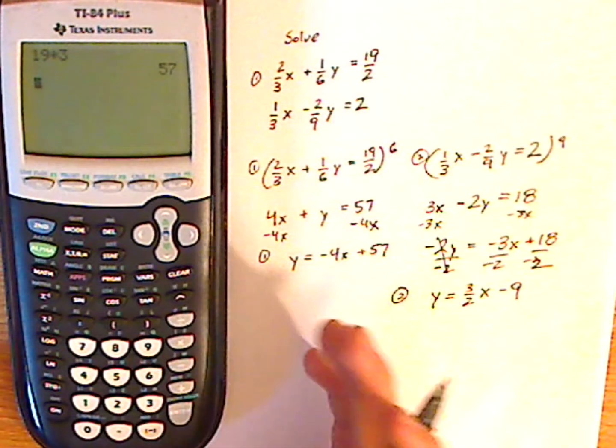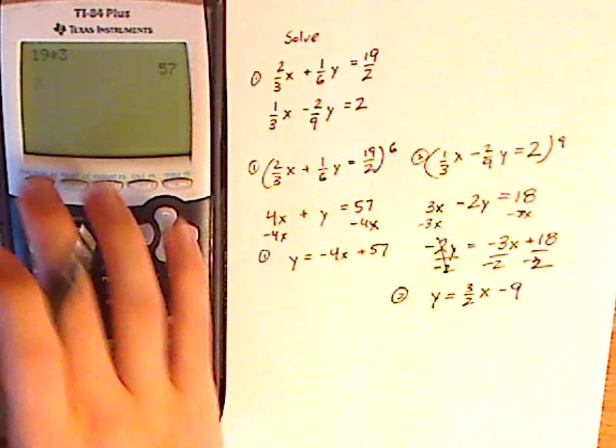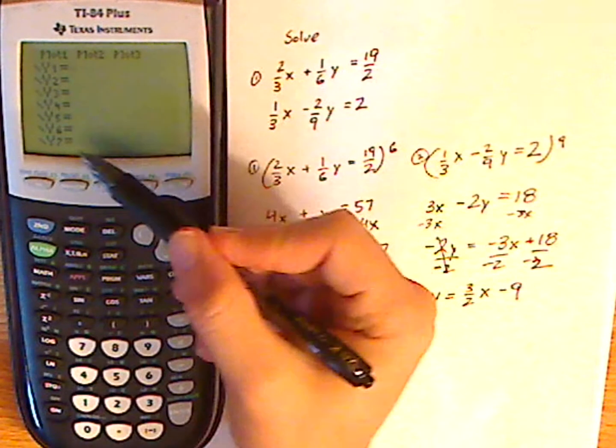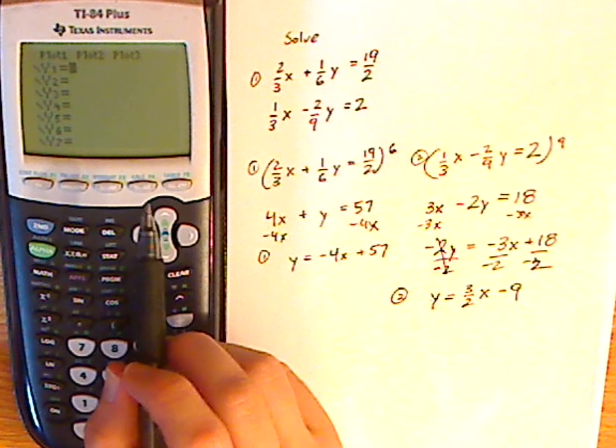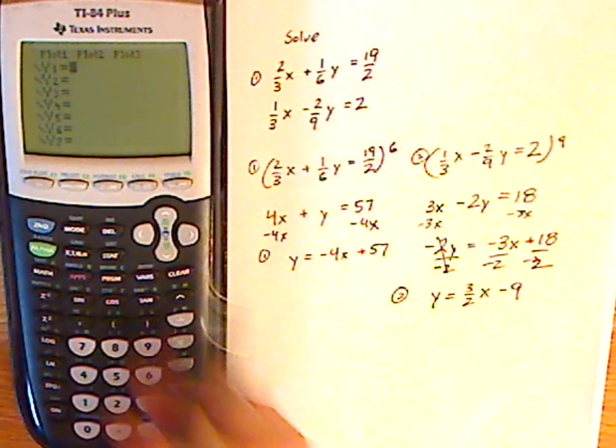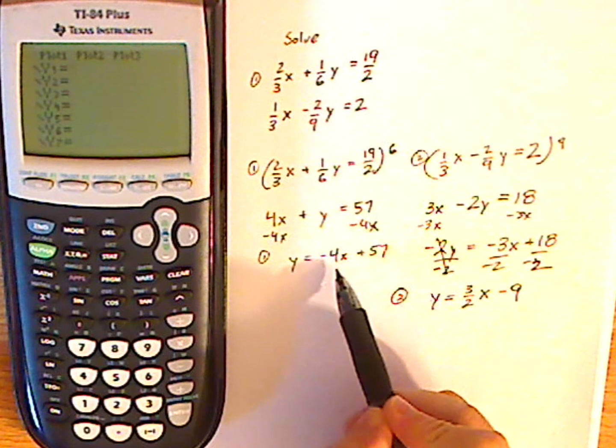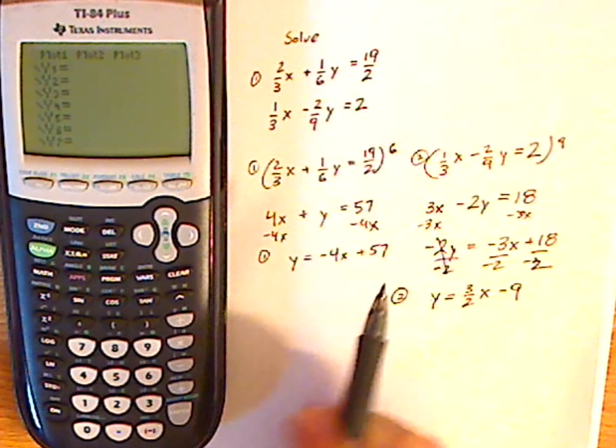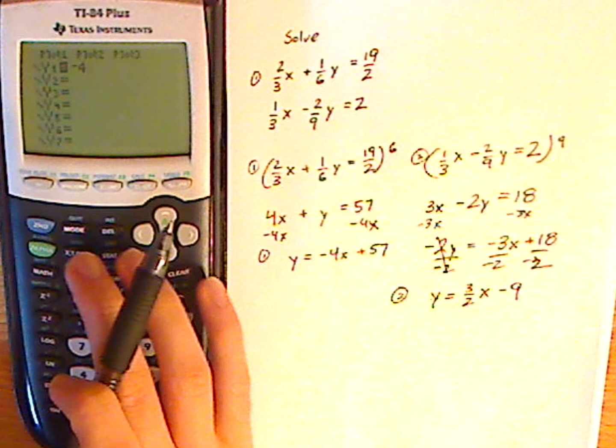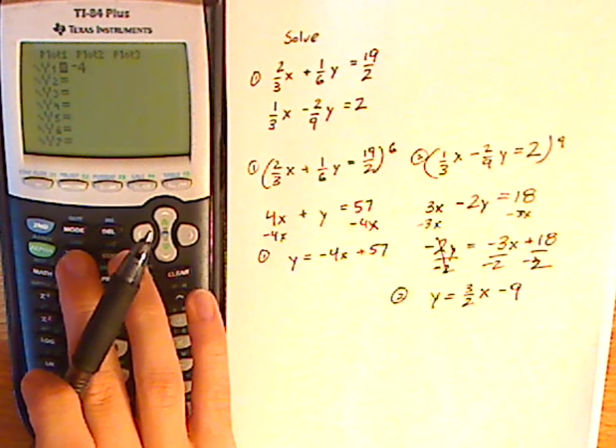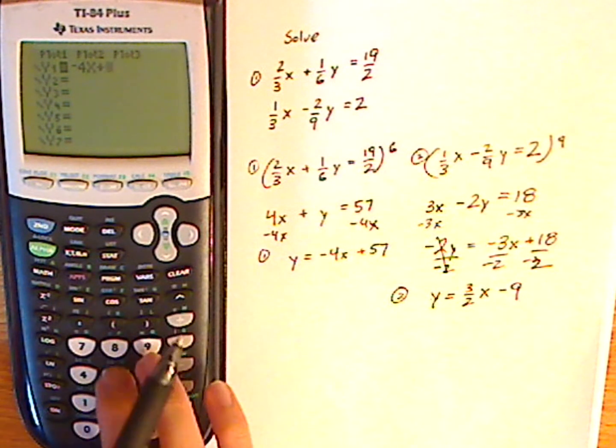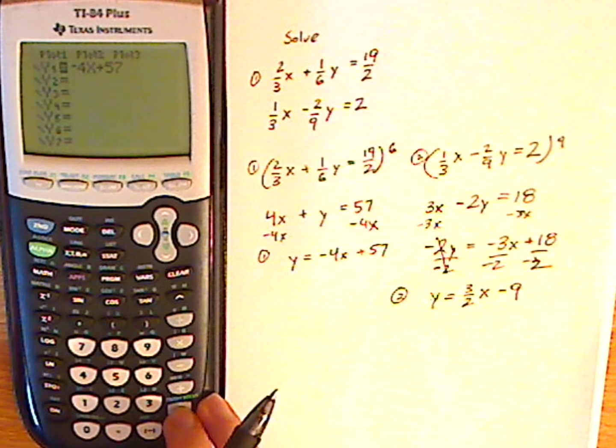So that's what you want to do first. Second, you want to type them in. So you go to the y= screen, which shows you all the functions. So push the y=, you get this screen. Now type in each equation individually. So you have -4. Now for your variable, push the variable button, which is this one right here. Push it. Plus 57. Push enter.